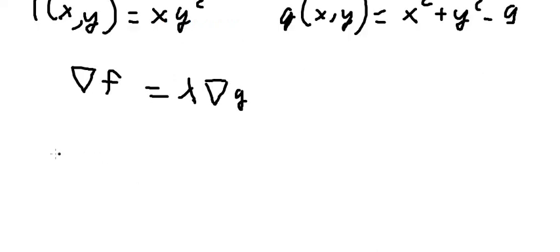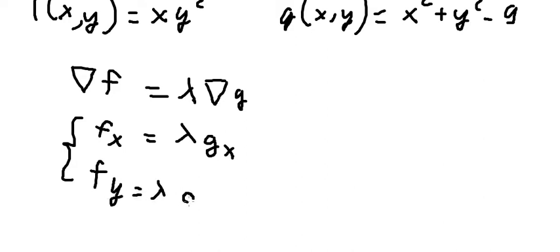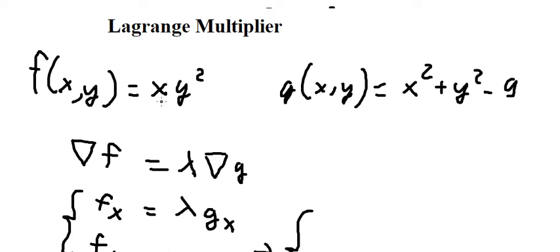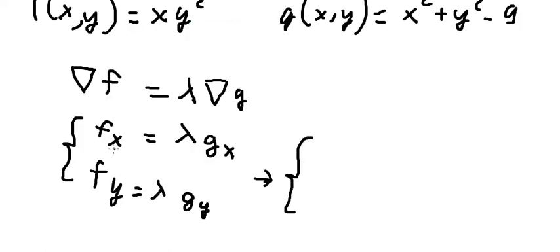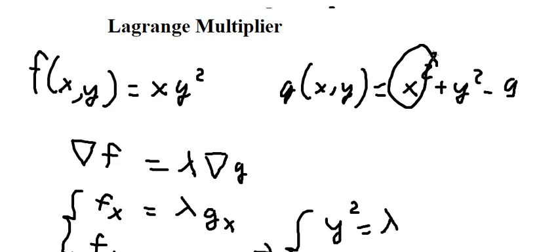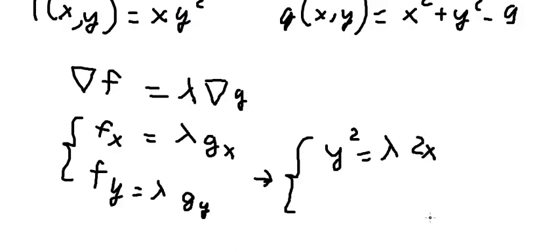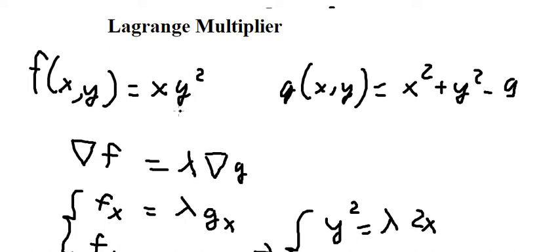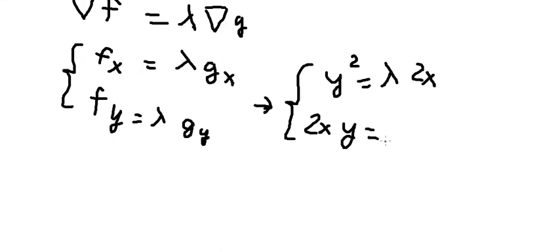Now we apply the formula using the gradient. For the partial derivative of F with respect to x, we get 1 and y squared. For the x squared term we get 2x. For the partial derivative with respect to y, the derivative of y squared gives 2y, and the next term also gives 2y.